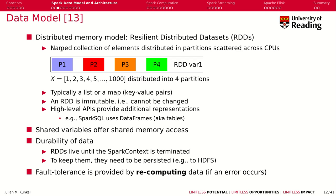The basic data model for Spark 1 was a distributed memory model using Resilient Distributed Datasets, or RDDs. The idea is that you have a set of data — think of it like a table of tuples — and these tuples are partitioned across CPUs. For example, numbers 1 to 1000 could be partitioned into four partitions, each hosted on a different processor, potentially on a different node, and therewith easily parallelized.